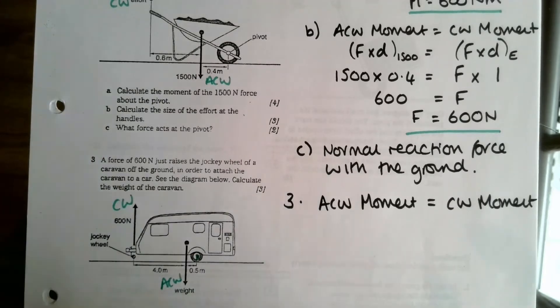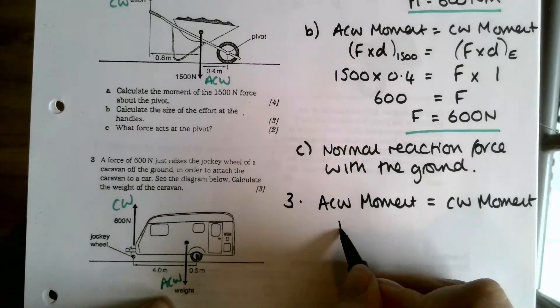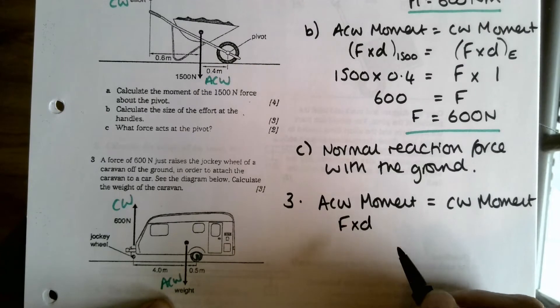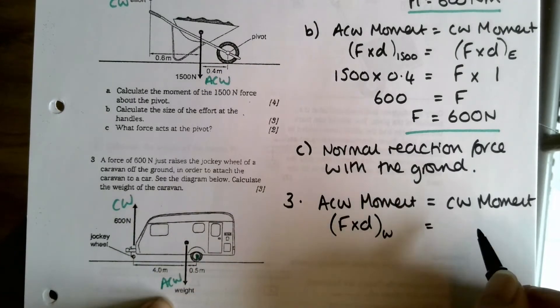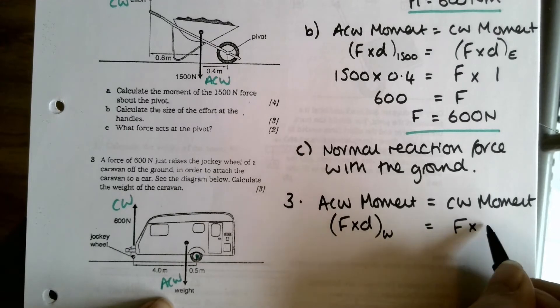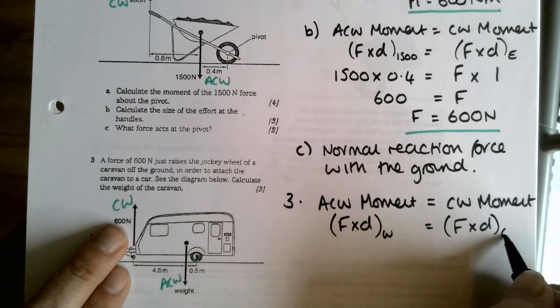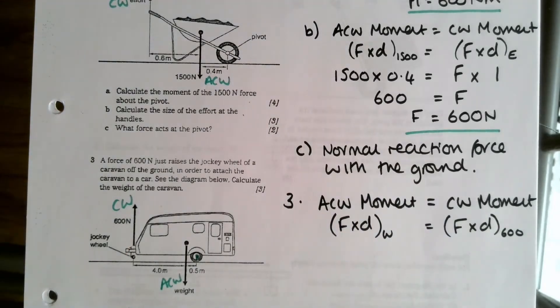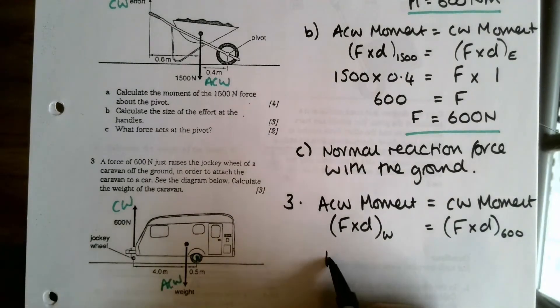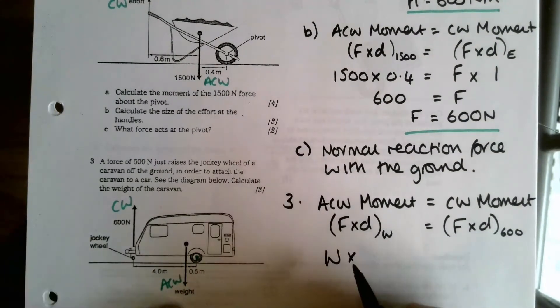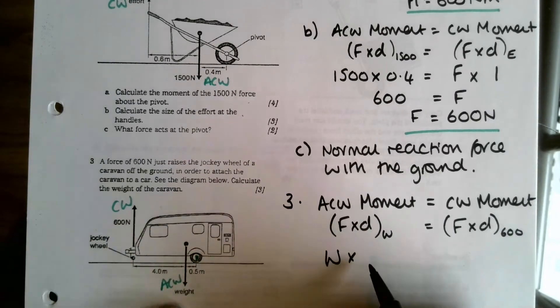So the weight is acting anti-clockwise from this pivot here, and this 600 is acting clockwise. So that's how we know which one's going where. So for the anti-clockwise my moment is going to be force times distance, and that's where the weight is. Equal to the clockwise moment, which is force times distance for this 600 one. So hopefully you see what I mean about just organizing the thoughts there with those subscripts.